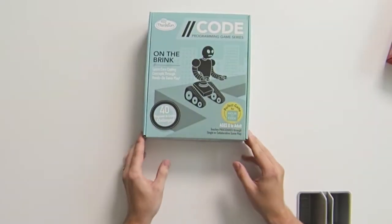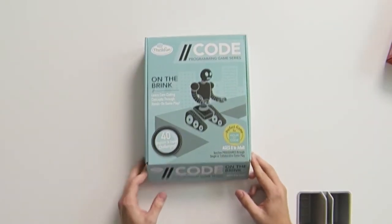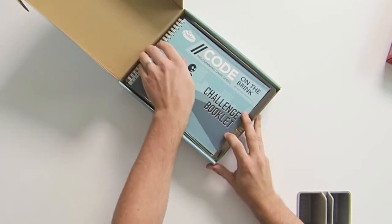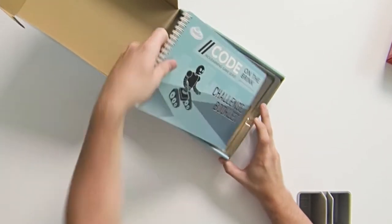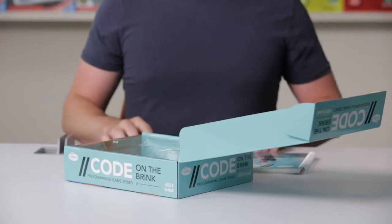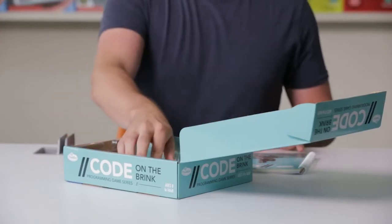On the Brink is for ages eight to adult and it teaches procedures through single or multiplayer gameplay. This is a great game for young learners who want to learn basic programming concepts in a totally unplugged screen-free environment.